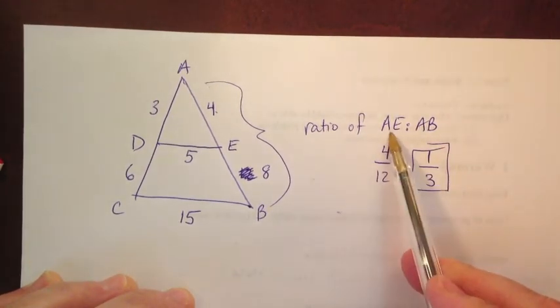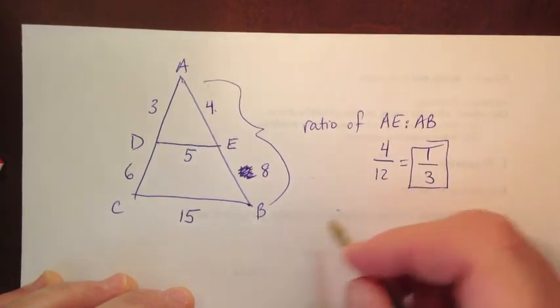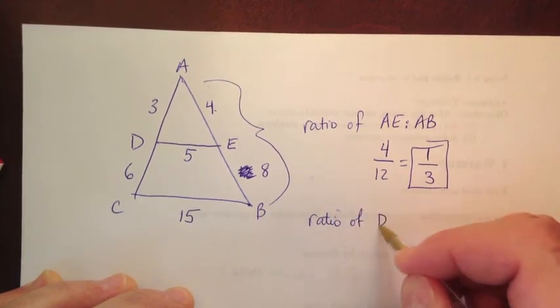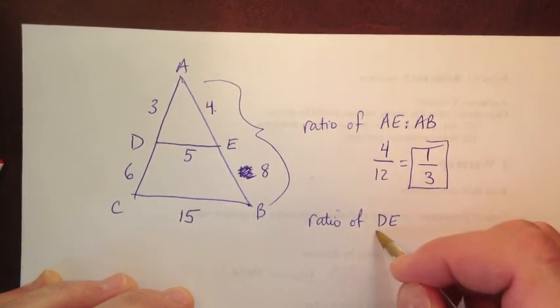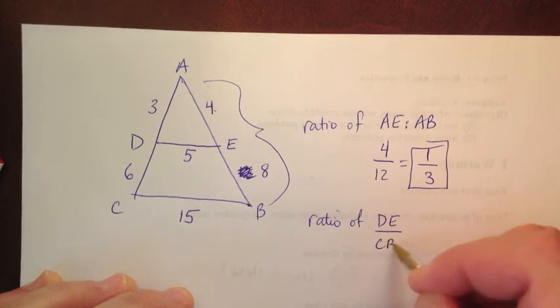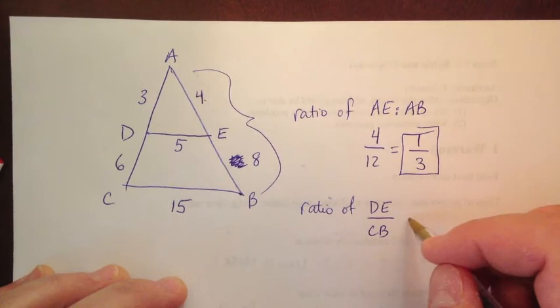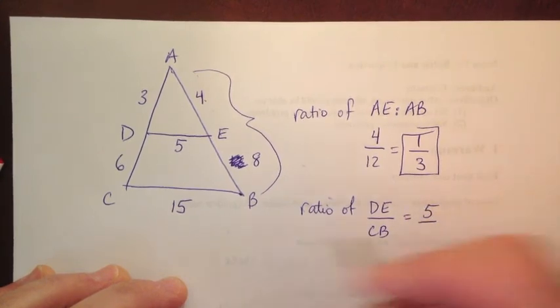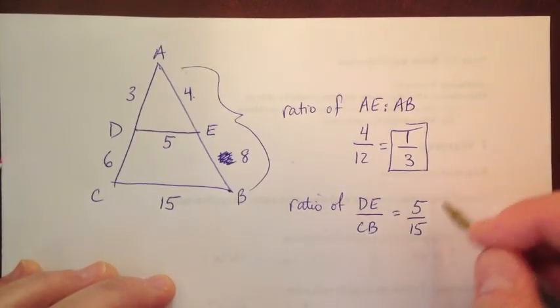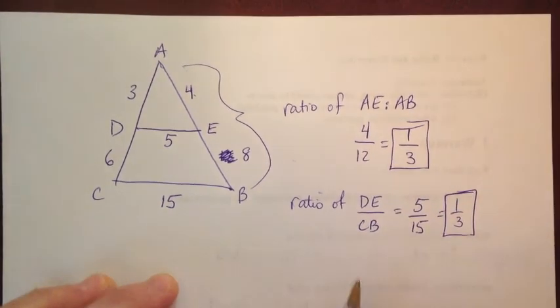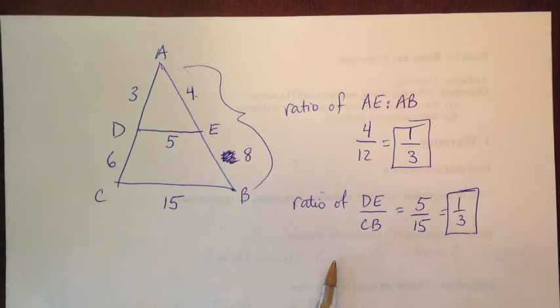If I said, what's the ratio of DE to CB, like that, well, DE is 5. CB is 15. So we're just matching it up. And that reduces to 1 third, which is the same thing. And that's all we're doing with ratios.